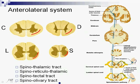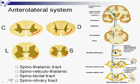The spinoolivary tract ends in the inferior olivary nucleus, where it will have a second decussation — it will cross sides — and through the inferior cerebellar peduncle, introduce itself into the cerebellum. So, as it has its second decussation, this means it will come back to the homolateral side and introduce itself into the homolateral part of the cerebellum.